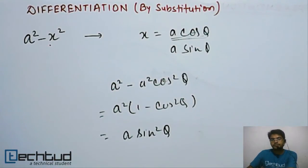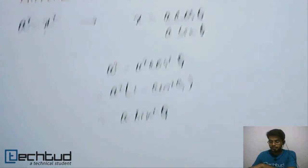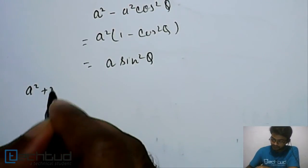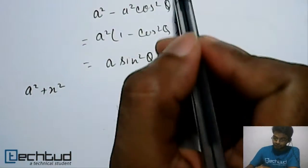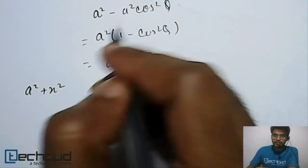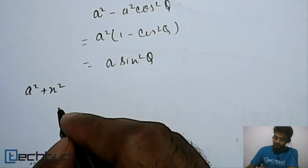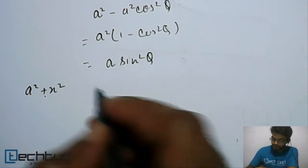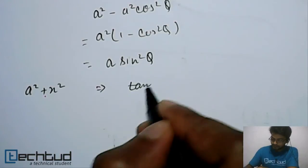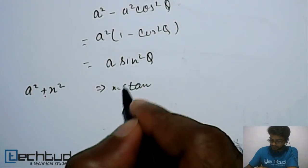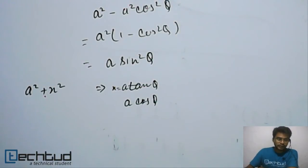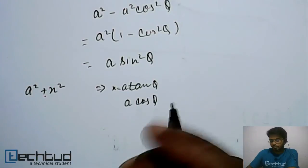So the problem will be simplified and you will be able to solve it faster. Similarly, if you have a²+x², here we used cosθ because cos²θ+sin²θ = 1. Since this is a plus expression, it is better to take x = a·tanθ or x = a·cotθ, and proceed from there.